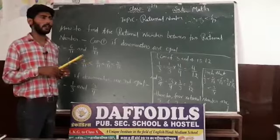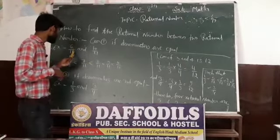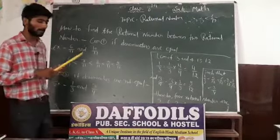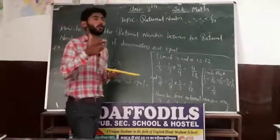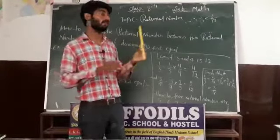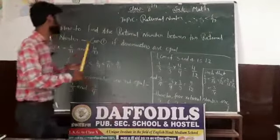So the rational numbers between 6/11 and 10/11 are simply 7/11, 8/11, and 9/11. Just like that — you understand. How to find the rational number between two given rational numbers when the denominators are equal.